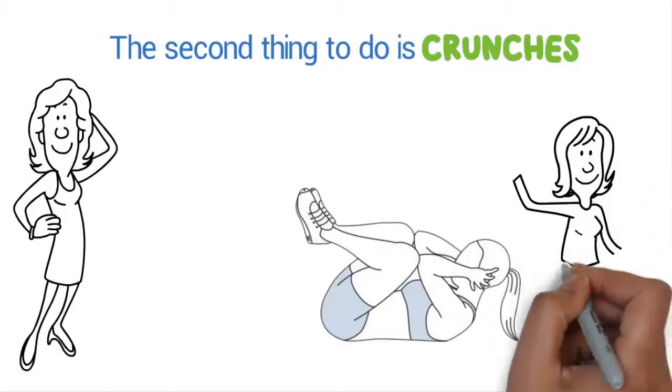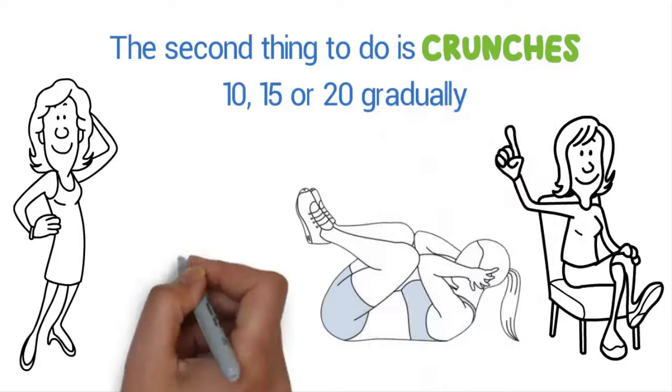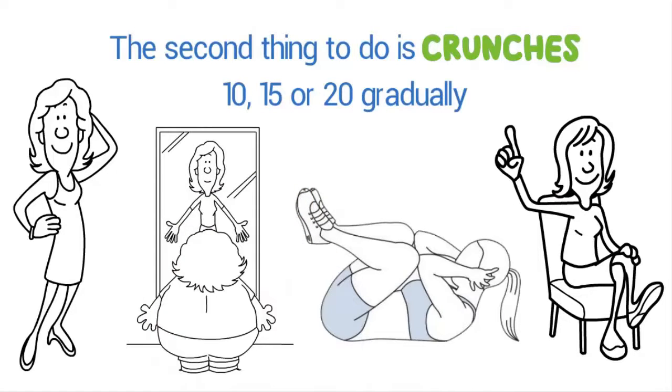You can also increase the number of crunches to 10, 15, or 20 gradually. You will start to see instant results and will eventually have a healthy body.